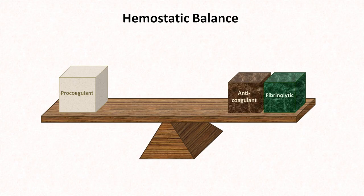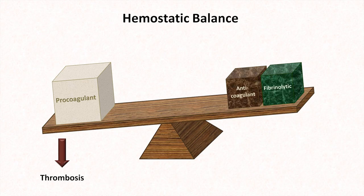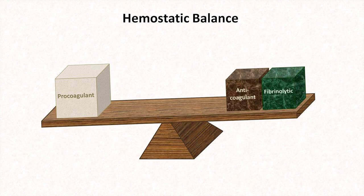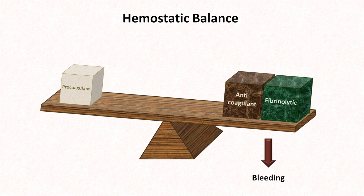If the procoagulants are too active, the patient will start to develop spontaneous thrombosis, such as DVTs and pulmonary emboli when affecting veins, and heart attacks and strokes when affecting the arteries and the heart. If either the anticoagulants or fibrinolytics are too active, or if the procoagulants are too inactive, the patient will suffer from bleeding problems which can be equally life-threatening.